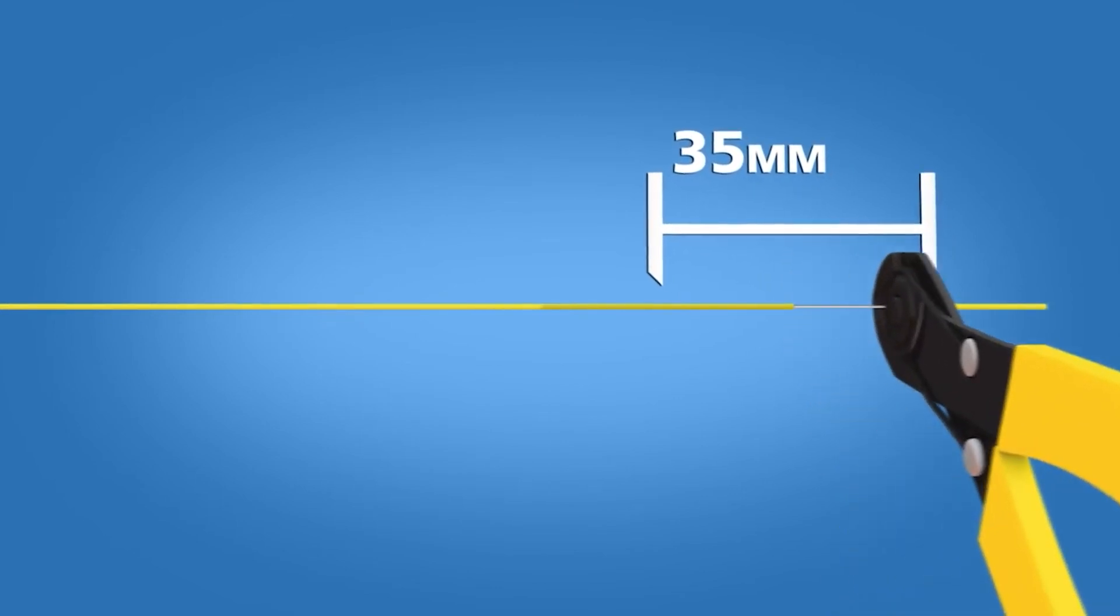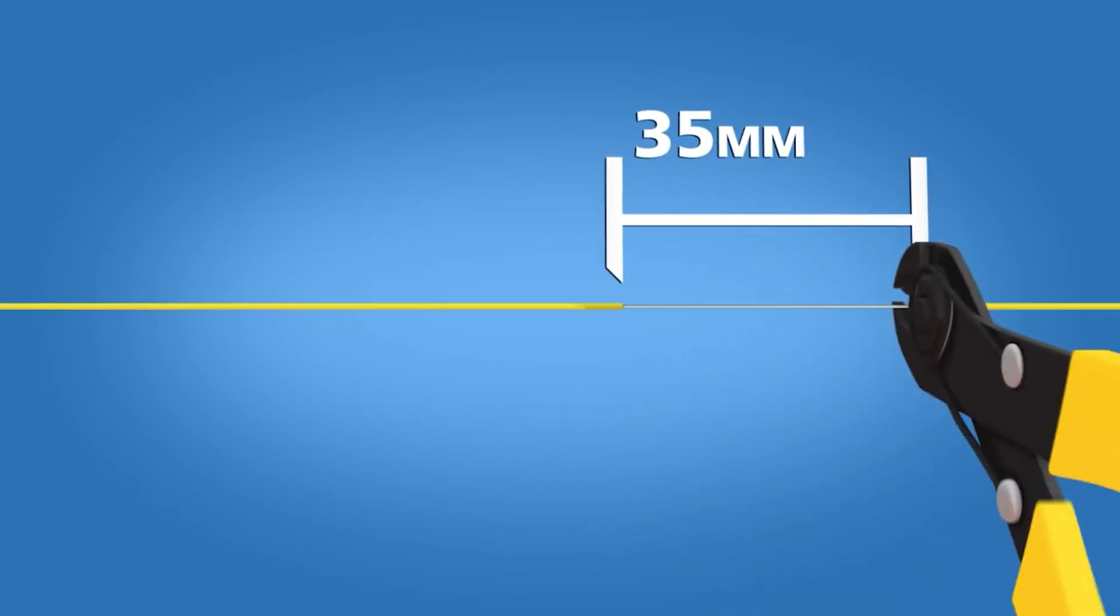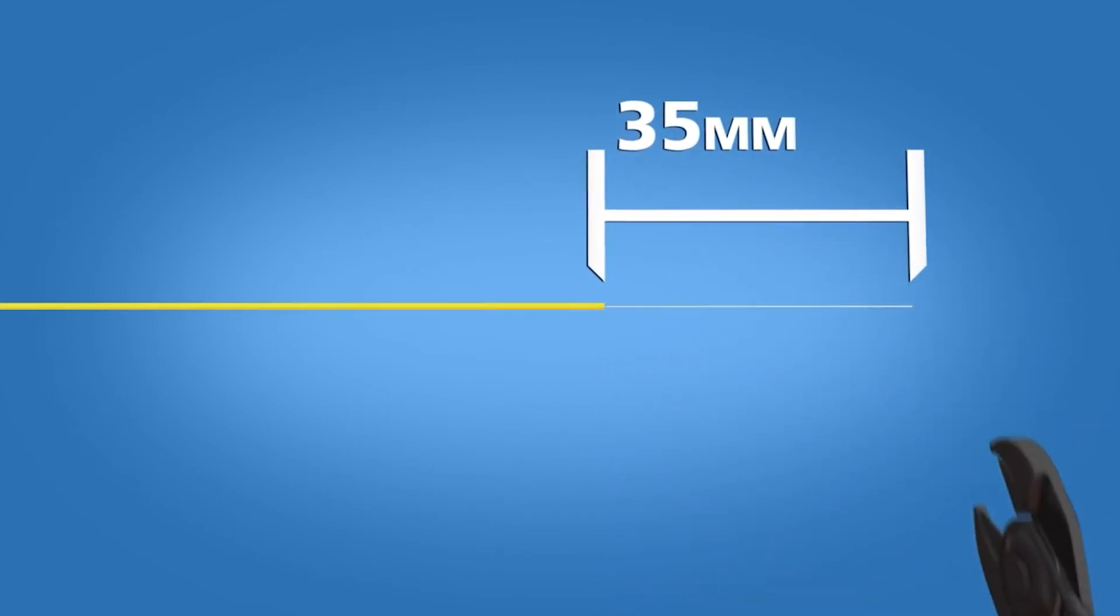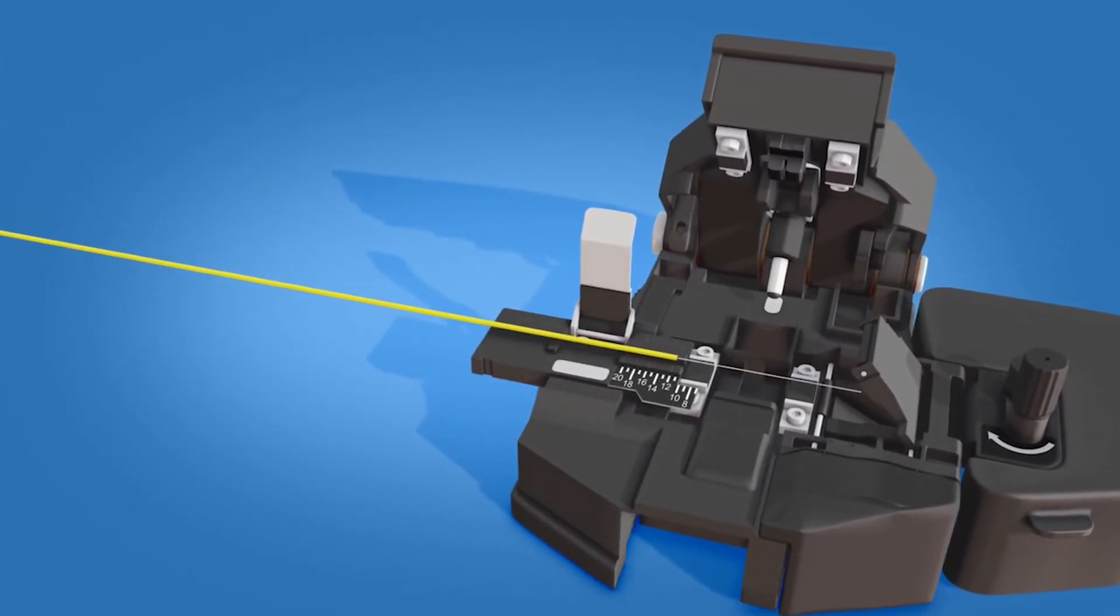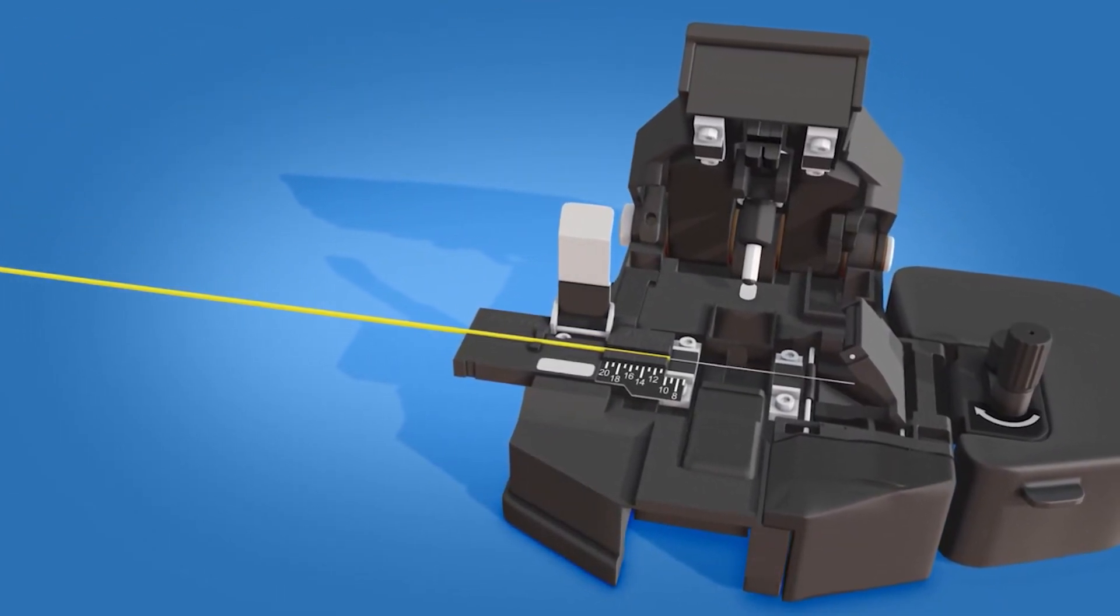Strip 35 millimeters of 900-micron and 250-micron coating off. Clean the fiber with a lint-free wipe and fiber preparation fluid. Place the fiber into the CT30 cleaver at the 10.5-millimeter cleave length.